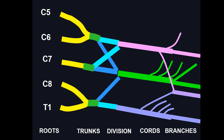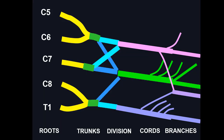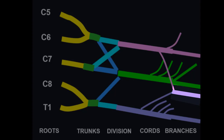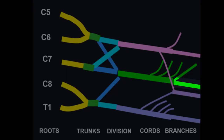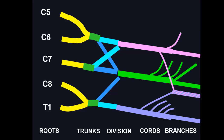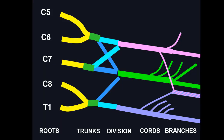The five main terminal branches of the cords of the brachial plexus that supply the muscles of the upper limb are: the ulnar nerve, the median nerve, the radial nerve, the axillary nerve, and the musculocutaneous nerve.